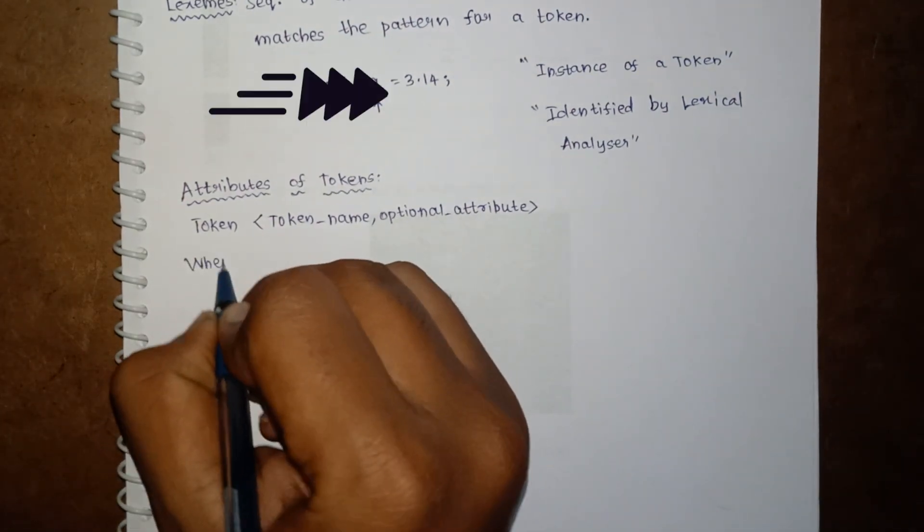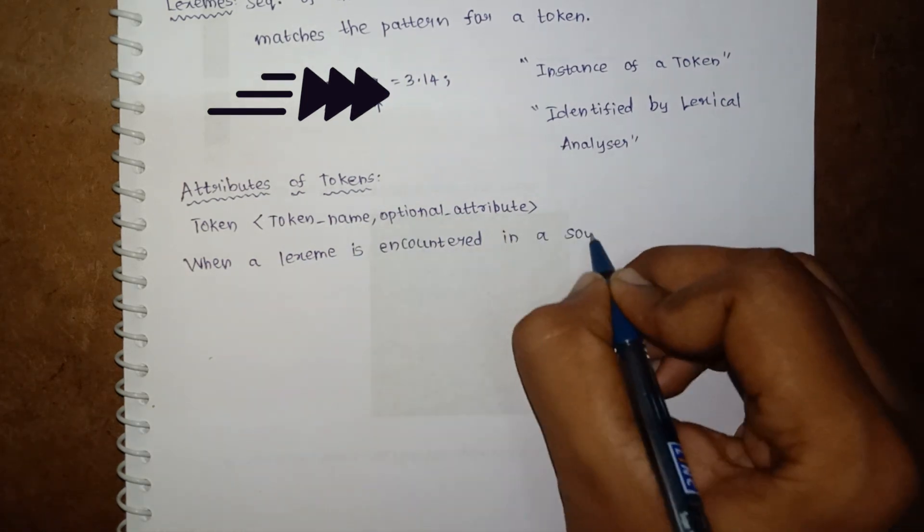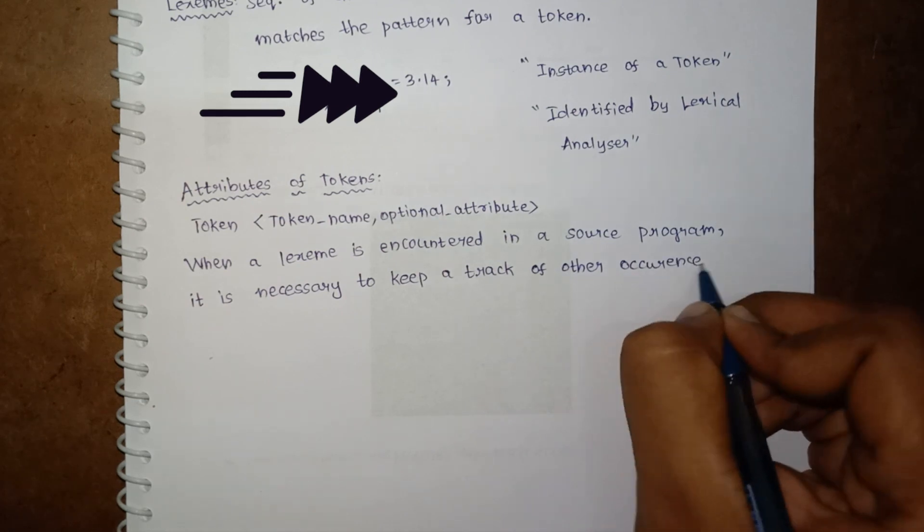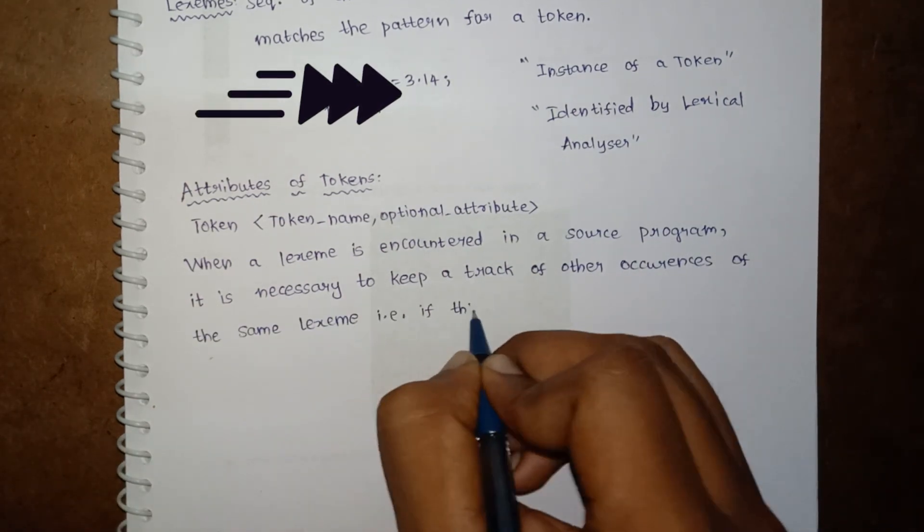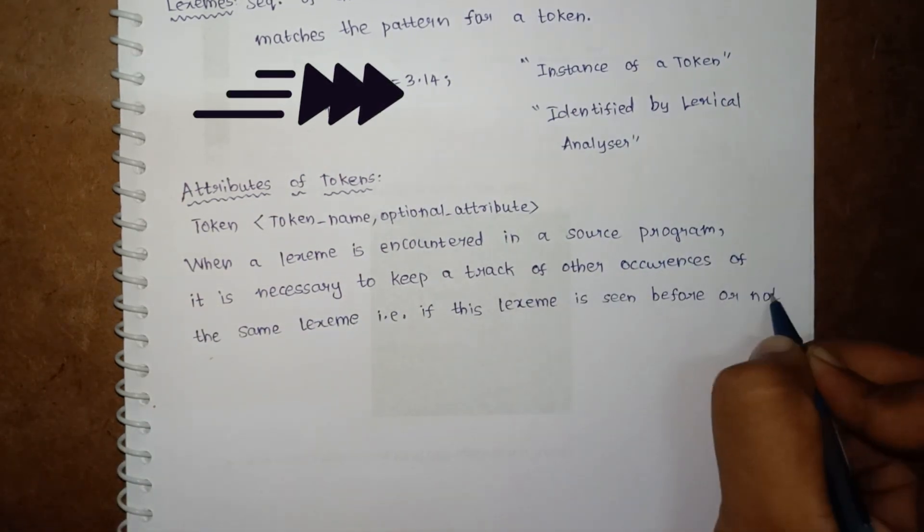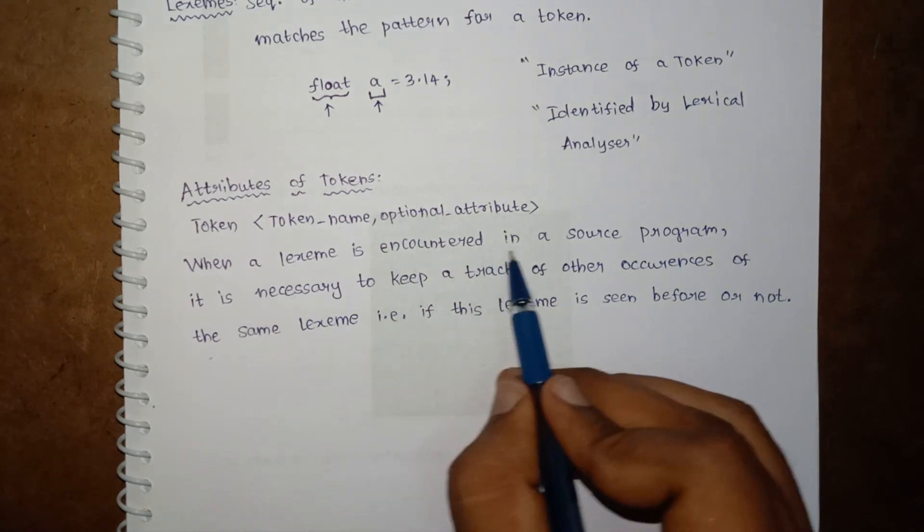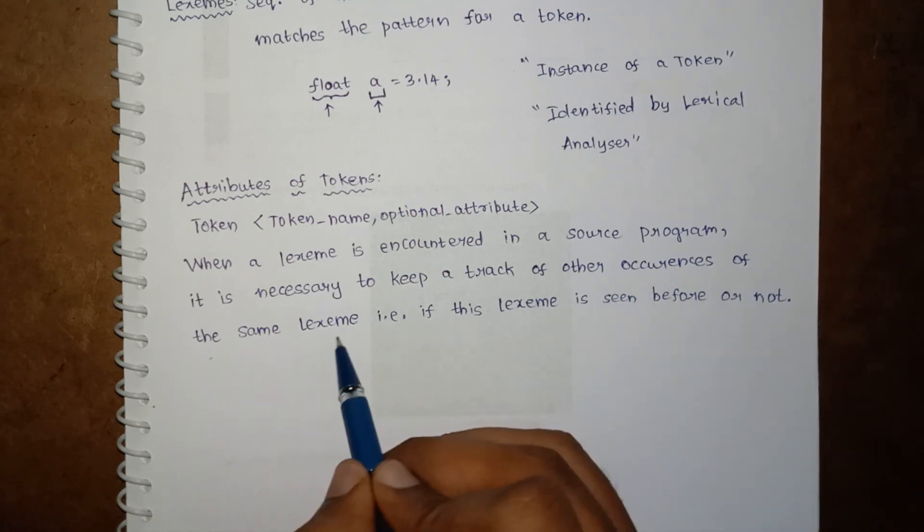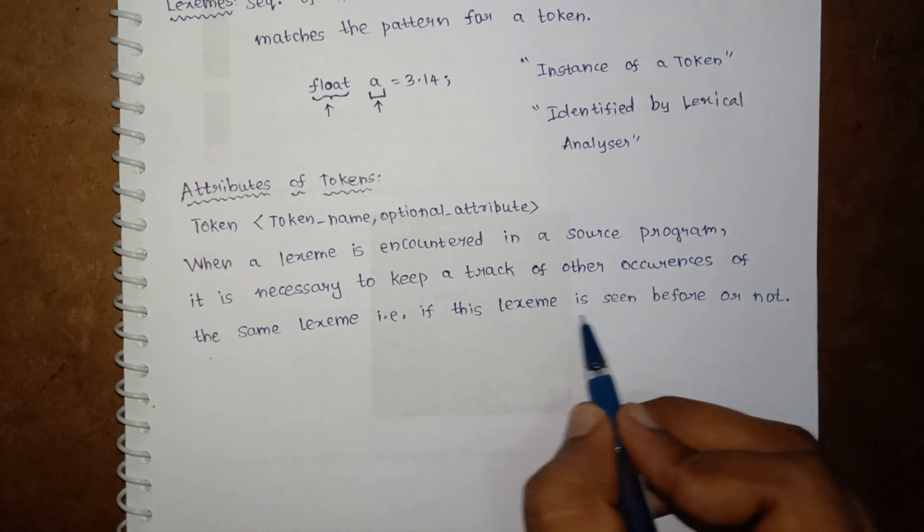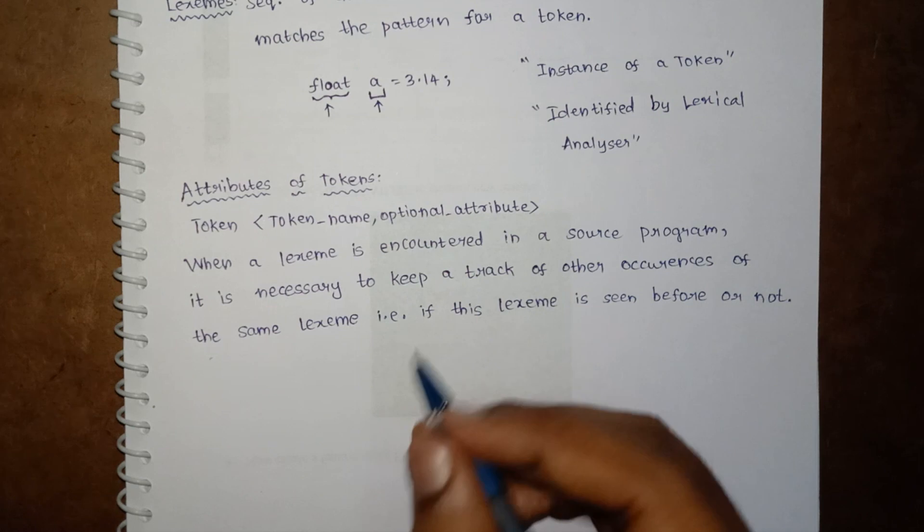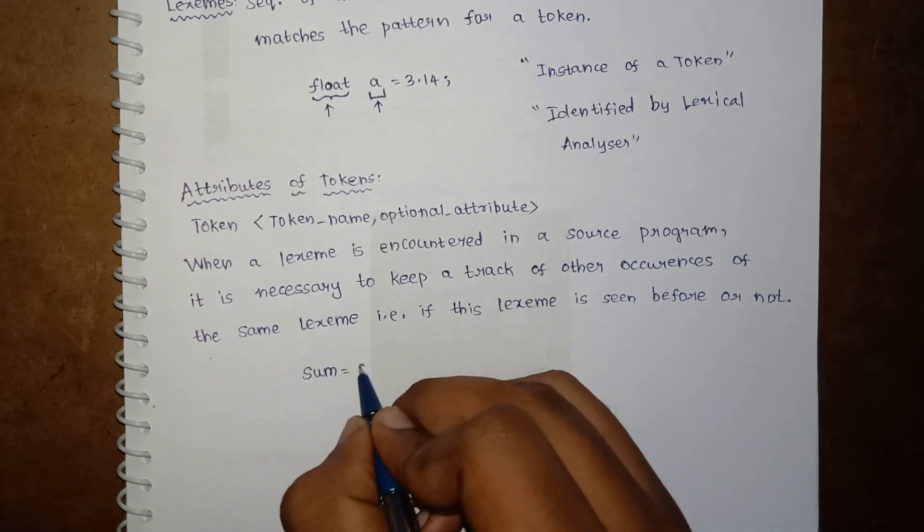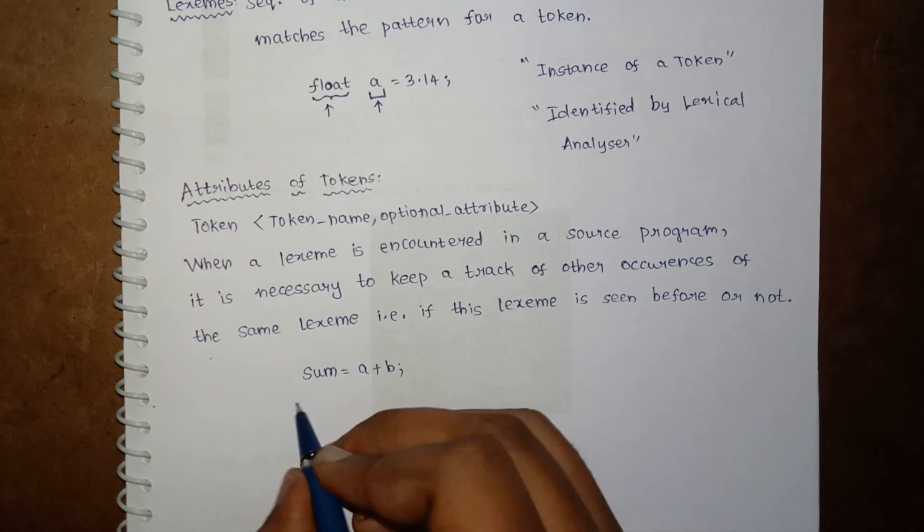When a lexeme is encountered in a source program, it is necessary to keep track of other occurrences of the same lexeme, if this lexeme is seen before or not. For example, consider this: sum equals a plus b, and average equals sum by two.